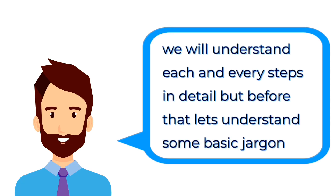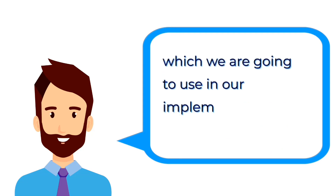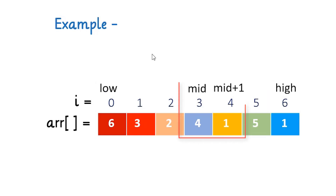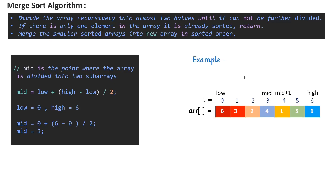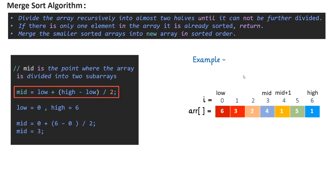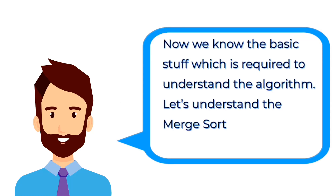But before that, let's understand some basic jargon which we are going to use in our implementation. Start index 0 is labeled as low and last index 6 labeled as high. Index 3 is mid and index 4 represents mid plus 1. Pay attention — this is the right way to calculate the mid index of the array. Please do not use (low + high) / 2 as it will overflow for large input. So always use this method to calculate the mid index.